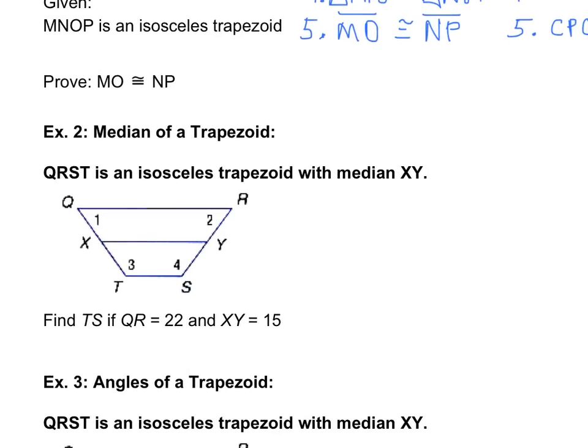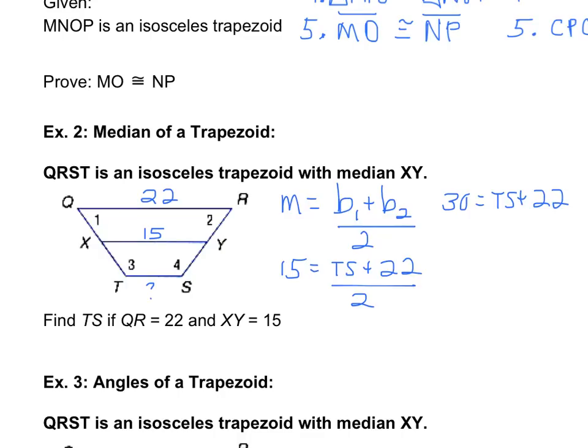In our next example, we're going to be finding, or using the median of a trapezoid to find a missing length. So we're told to find TS if QR is 22, put that on the diagram, and XY is 15, TS is our unknown. So we can use our mid-segment theorem that we already came up with, which is that base 1 plus base 2, all divided by 2, is equal to your mid-segment. Put in your mid-segment that you know, 15, TS is my unknown, plus 22, which I do know, all divided by 2. Multiplying both sides by 2, I get 30 equals TS plus 22, and subtracting, I get that TS is 8. Hopefully that was a pretty quick one.